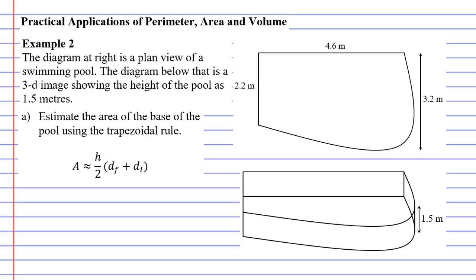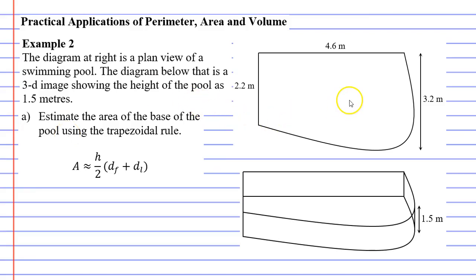In this video, we're going to complete example 2, which says that the diagram at right is a plan view — or overhead view or bird's eye view — of a swimming pool. The diagram below is a 3D image just showing that the height of the pool is 1.5 metres. We'll start with question A, which wants us to estimate the area of the base of the pool using the trapezoidal rule. That means finding the area of the image at the top right.